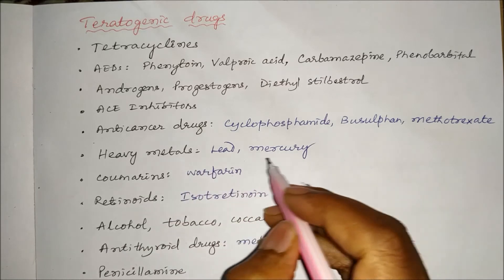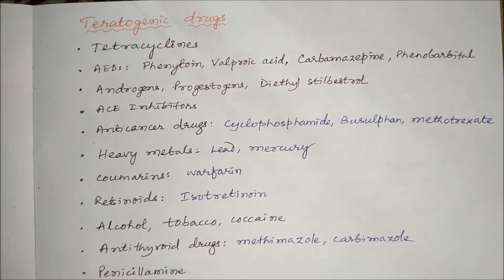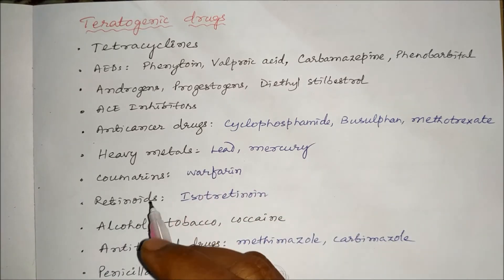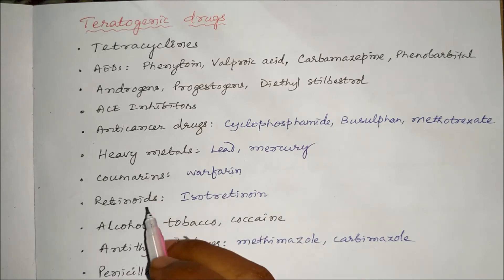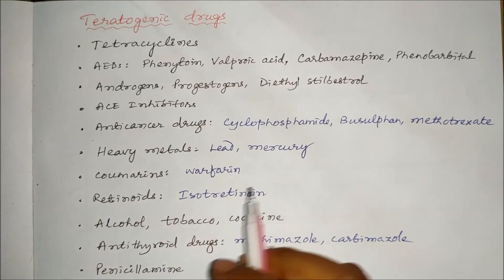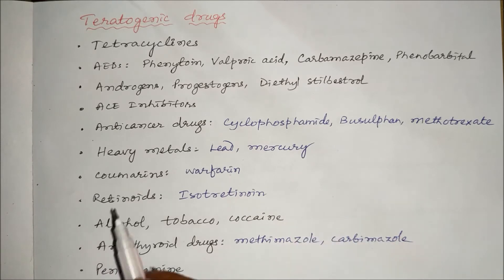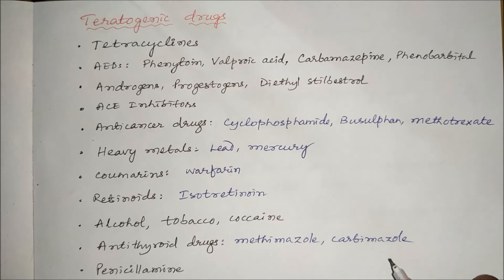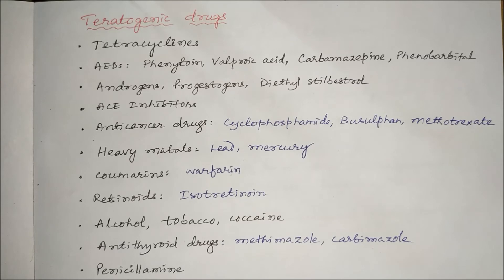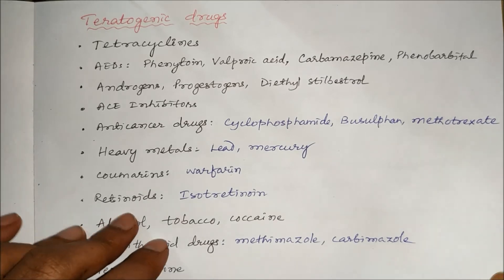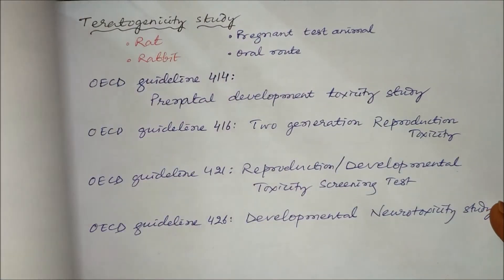Other teratogenic drugs include androgens, progestogens, diethylstilbestrol, ACE inhibitors (antihypertensives), anticancer drugs like cyclophosphamide, busulfan, and methotrexate; heavy metals like lead and mercury; anticoagulants (coumarins) like warfarin; vitamin A derivatives like retinoids (isotretinoin); alcohol, tobacco, cocaine; anti-thyroid drugs like methimazole and carbimazole; and penicillamine for rheumatoid arthritis. All these drugs should be avoided during pregnancy.